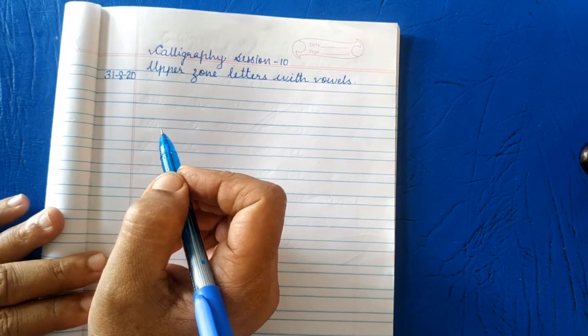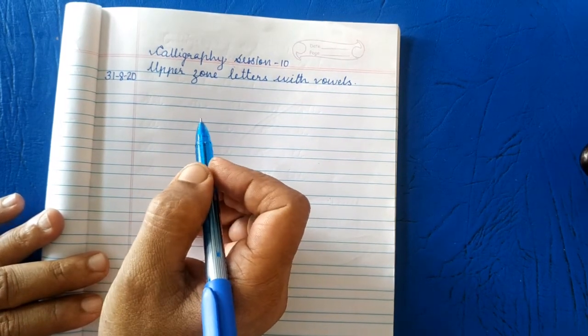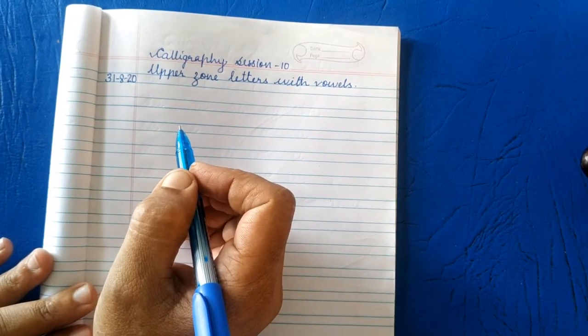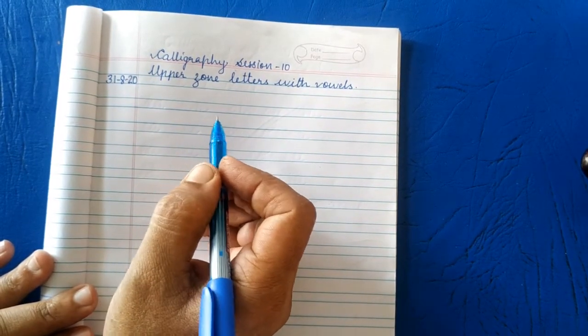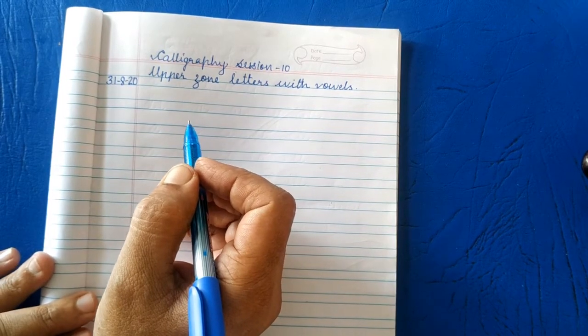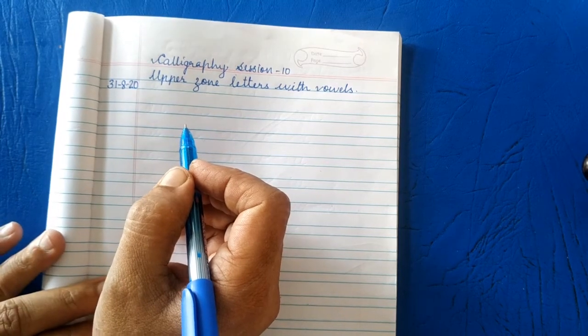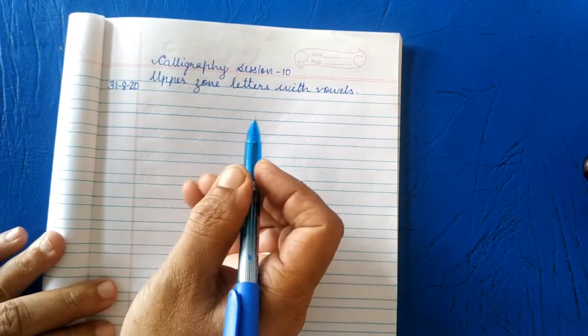Namaste children, welcome to calligraphy session 10. In the last session we have learned middle zone letters with the vowels. I hope you all are practicing well. Today we are going to learn how to write upper zone letters with the vowels.